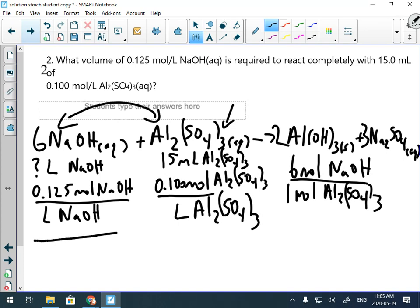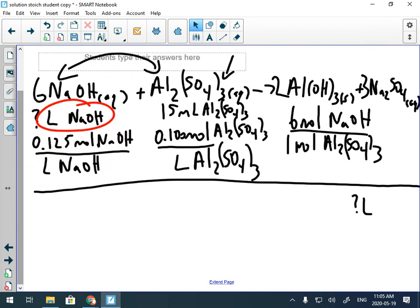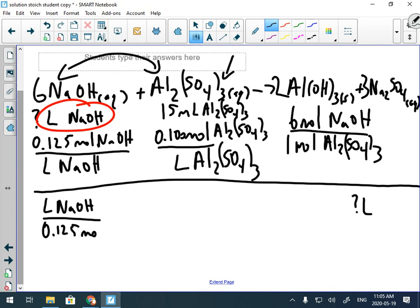Okay, we got everything we need. Now this is not a concentration problem, so we can't use that nifty shortcut. We're solving for volume of sodium hydroxide, so we got to start with the volume of sodium hydroxide on top. The only thing that has it is the concentration of sodium hydroxide, so we're going to flip that: liter sodium hydroxide on top over 0.125 mole sodium hydroxide.